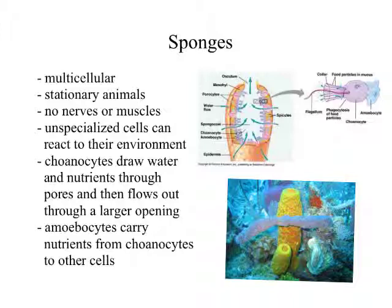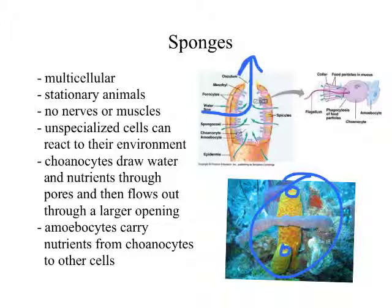The two kinds of cells in sponges are choanocytes, which draw water through the pores of a sponge. As water flows in, it brings in nutrients that get trapped, and water then flows out through a bigger opening. Looking at the picture, we see little pores where water flows in and a larger outflow opening near the top. So these choanocytes are trapping nutrients as water flows through the sponge.